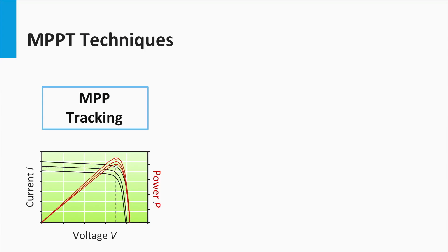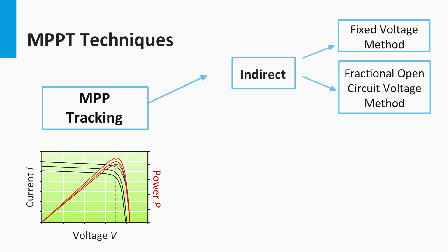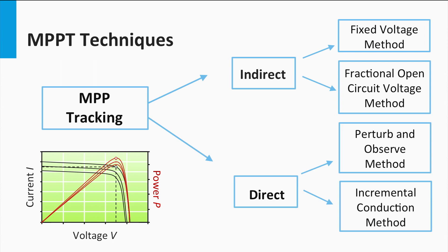Some of the modern literature talks about two broad categories of MPPT techniques: indirect MPP tracking, like the fractional open-circuit voltage method, or direct MPP tracking, like the perturb and observe method or the incremental conductance method. Each of these techniques has its own advantages and disadvantages.